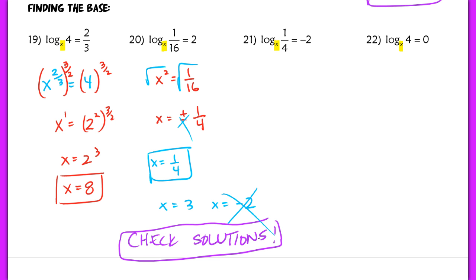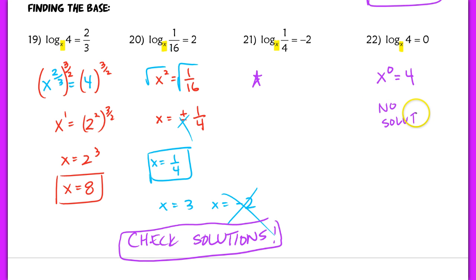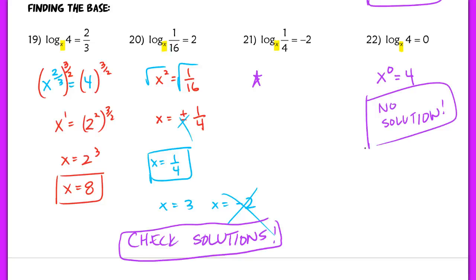For number 22: x raised to the 0 power should equal 4, but anything raised to the zero power equals 1, never 4 — so this has no solution. That's the end of the lesson. Tomorrow you'll get a lot of practice with this. Make sure you come to class ready to ask questions. If you're still unsure how to rewrite from log form to exponential form, go back and watch that section again, because that's really the foundation for doing any of these log equations.